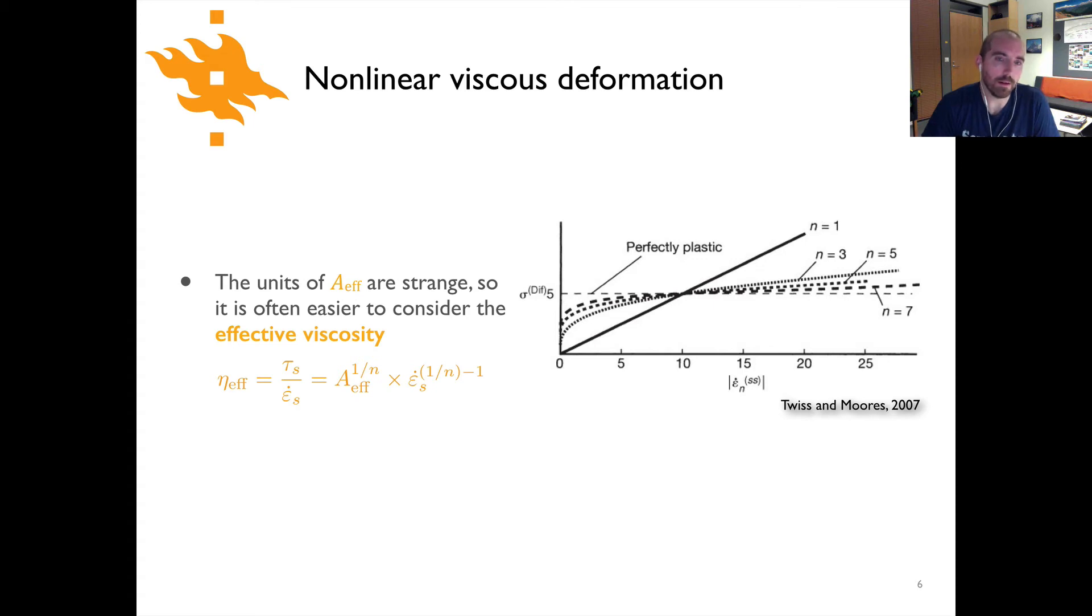Now the units for this effective material constant Aeff are kind of unusual, Pascal to the n seconds. So it's often easier, you can actually calculate an effective viscosity, which is simply dividing the stress by the strain rate, or taking Aeff to the one over n power, and then multiplying that by the strain rate to the one over n minus one power, which gives you the same thing. And that will perhaps make it a little bit easier to relate the effective viscosity to viscosities of other materials that are perhaps more familiar.